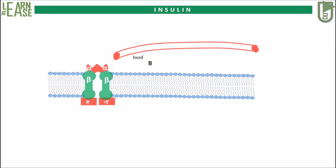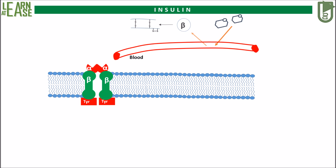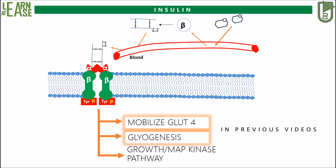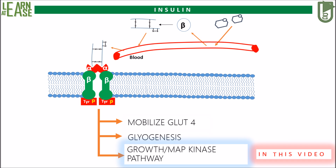In my previous videos I explained that when insulin is produced in response to sugar ingestion, it travels into the blood and reaches the target tissue. Insulin then binds to its receptor and activates it. This activates several pathways, but the most well studied are the ones that induce mobilization of GLUT4, glycogen synthesis, and growth. I have already explained the first two pathways in previous videos — links are in the description below. In this video, I will explain induction of growth by the MAP kinase pathway.